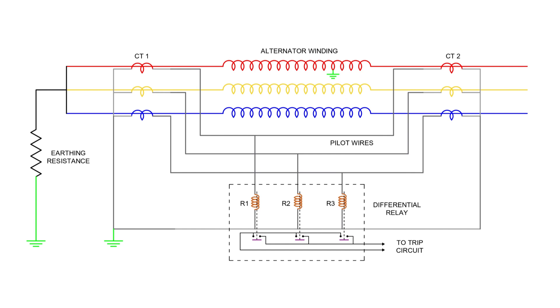Now, let's discuss how this works during faults. Suppose an earth fault occurs on phase R. Due to insulation breakdown, current will now flow through the fault and reach the ground via the earthing resistance. Because of this, the currents in CT1 and CT2 for phase R will become unequal. The difference in these currents will flow through the relay coil R1, which then activates the trip circuit, isolating the alternator.